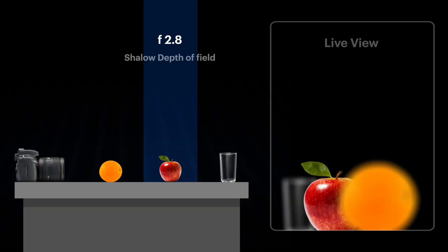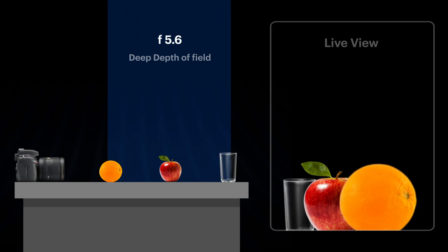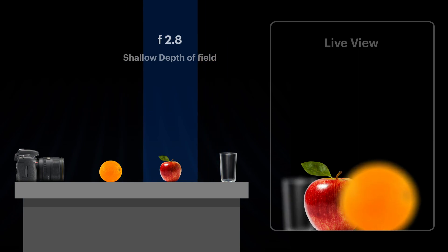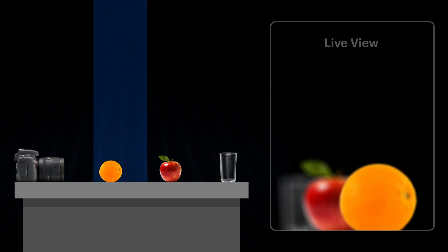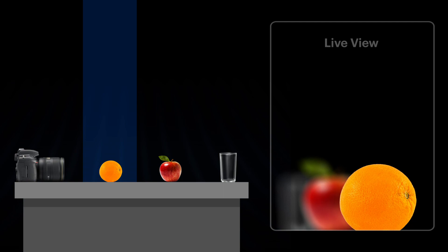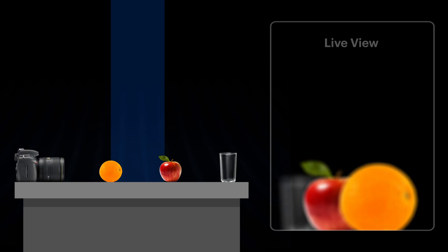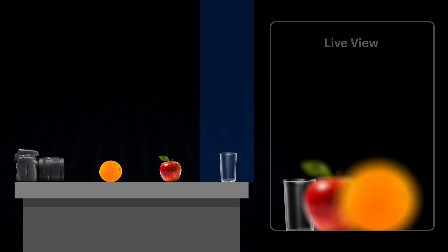Consider depth of field as a blue focus box in front of the camera. As we increase the aperture, let's say to F5.6, the focus area will also expand, covering some part of the orange and the glass as well — we can call this deep depth of field. If we shift our focus to the orange, the apple and the glass behind it become blurred, as they are not falling under the focus range of F2.8. Similarly, we can shift our focus to the glass, which will make our foreground objects blur because they are getting away from the focus range.